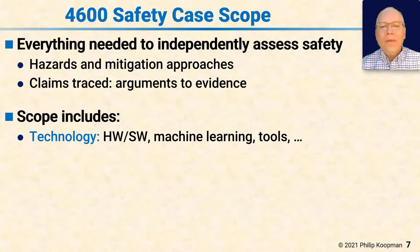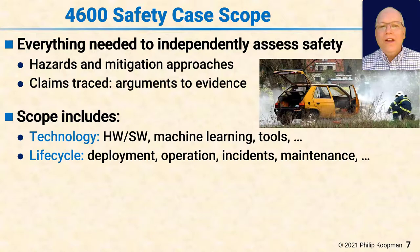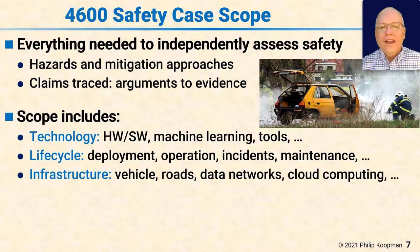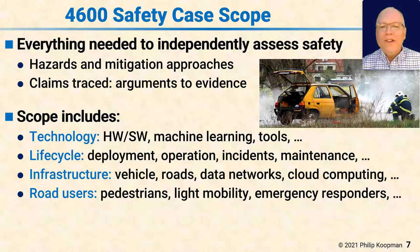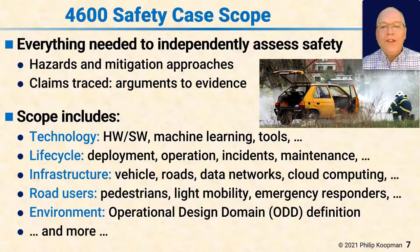The scope includes technology — hardware, software, machine learning, tool chains, data sources — and lifecycle: not just deployment but also operation, incidents, and maintenance. For example, if you have a vehicle fire, does it know how to make itself safe so it doesn't endanger firefighters through unexpected motion? It also includes infrastructure, the vehicle, roads, data networks, cloud computing, road users such as pedestrians and light mobility users, emergency responders, and the environment such as the operational design domain definition. Everything that can possibly affect safety has to be dealt with in the safety case.